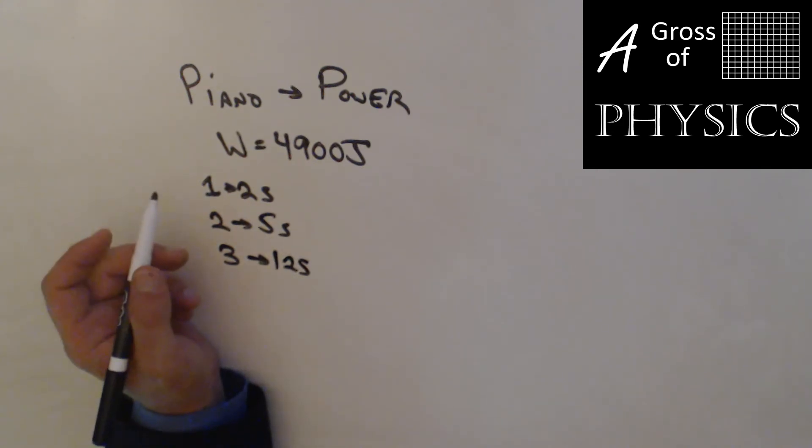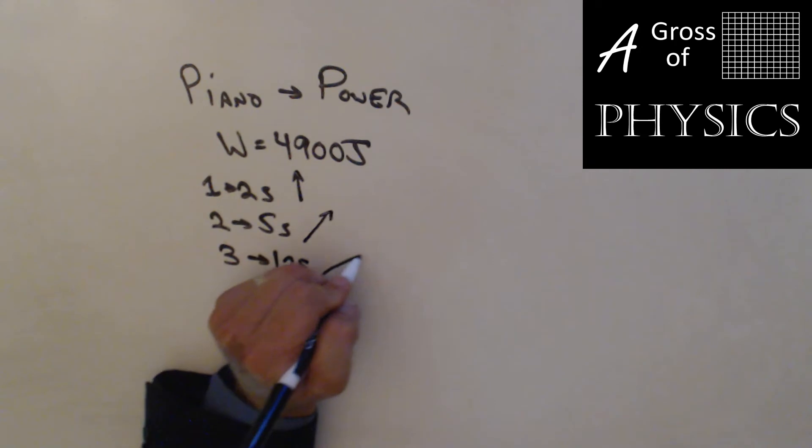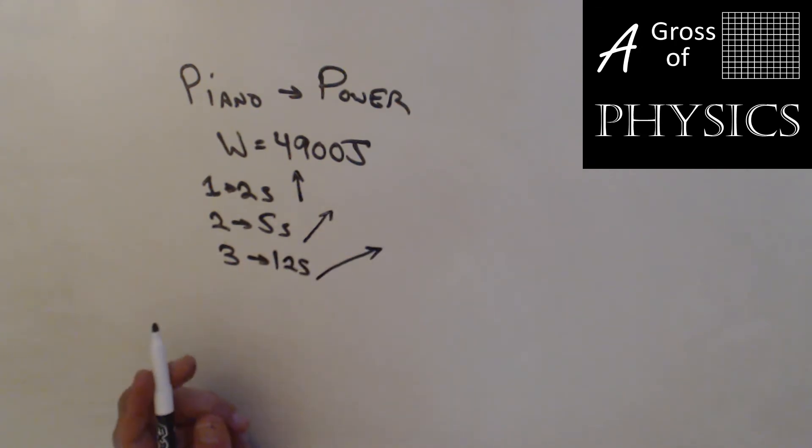That's where the power will be different for all three methods. If you remember, method one was lifting it straight up, method two was up a slight ramp, and method three was up a longer ramp.